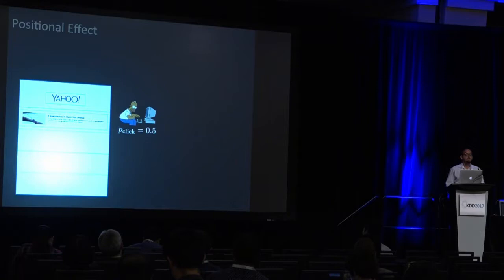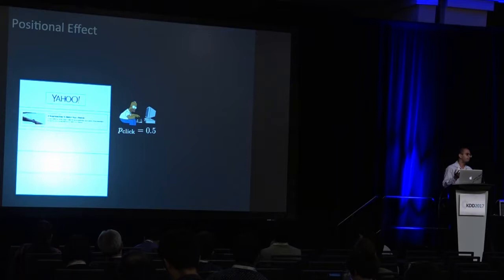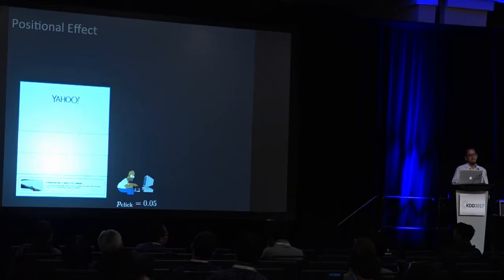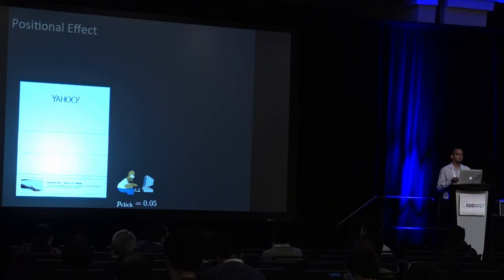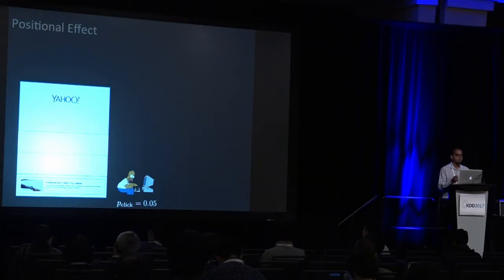The root reason for this trade-off is the positional effect. Consider hypothetically an ad shown in position one with a click-through rate of 0.5. If you show the same ad at the very bottom of the page, it's likely to have a much lower click-through rate — say 0.05. This alludes to exactly why there is a trade-off: you can only ever show one item at the top slot of the page, so automatically there's going to be some kind of trade-off.